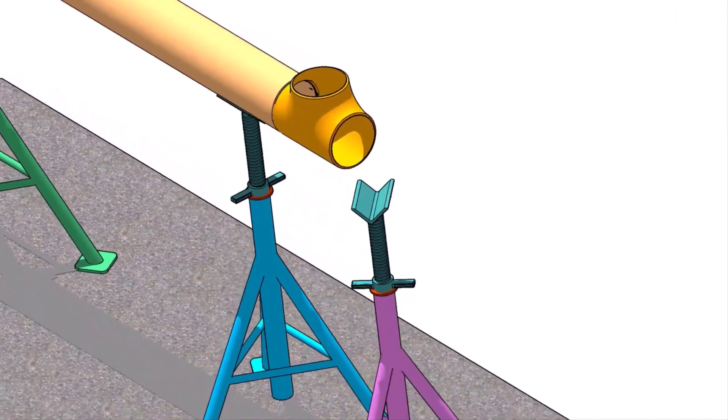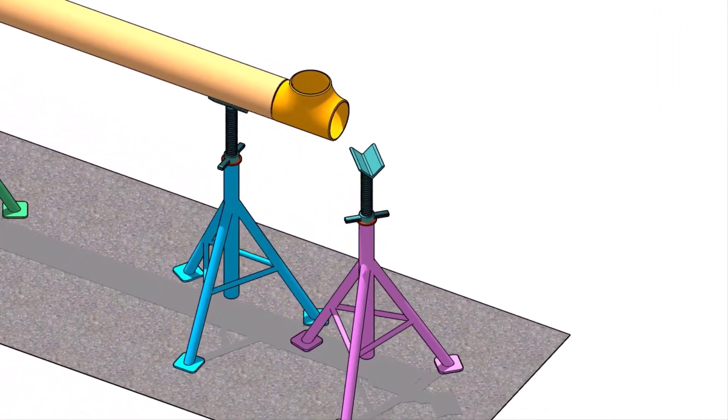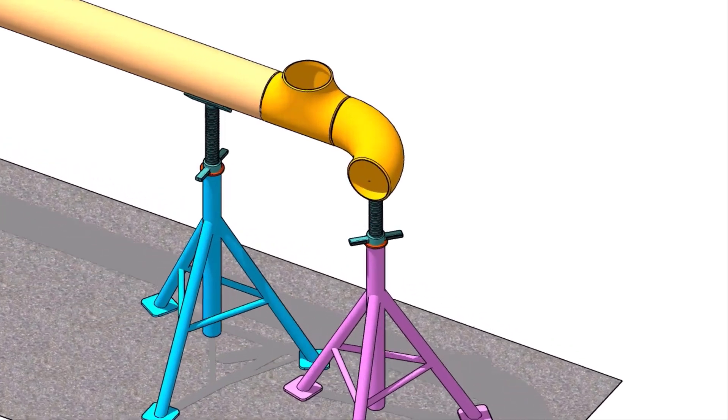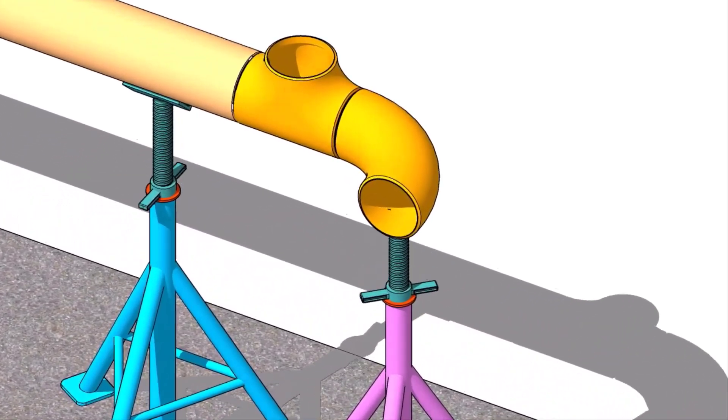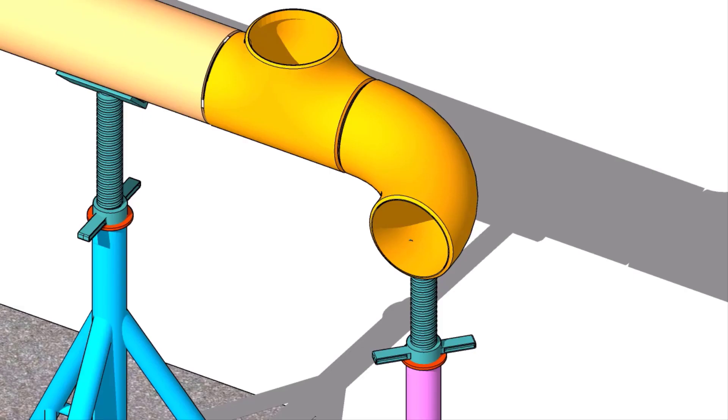Put an adjustable stand near the tee as shown. Put the elbow on the stand. Maintain the level. Put a gap rod in the joint and make sure the gap is equal all around.